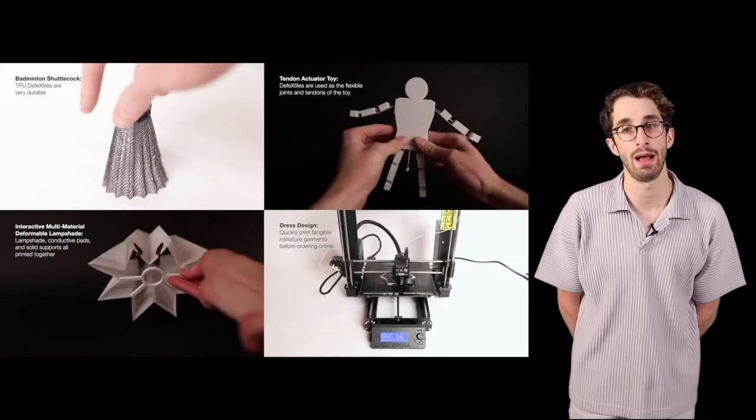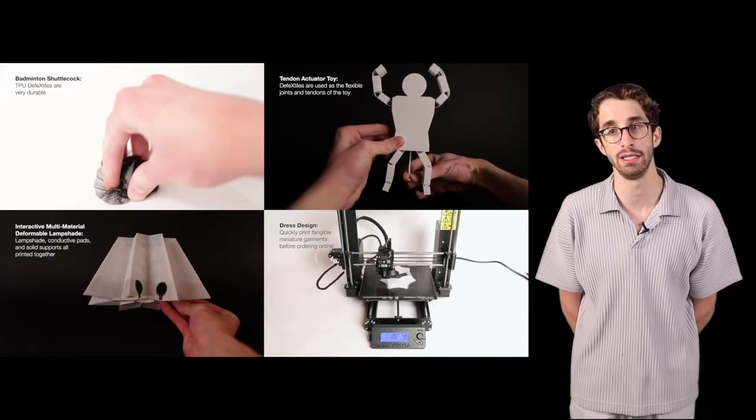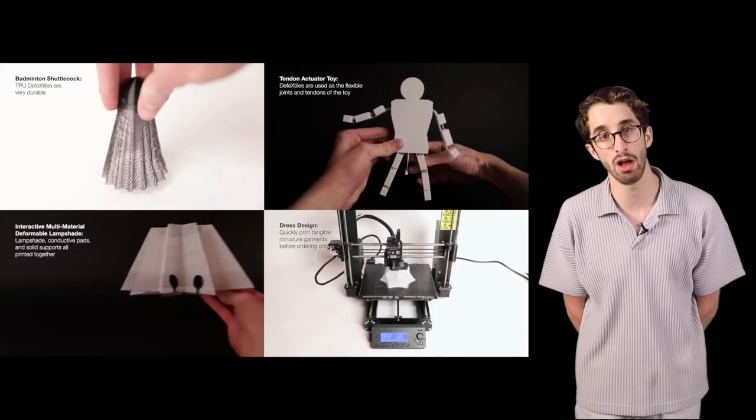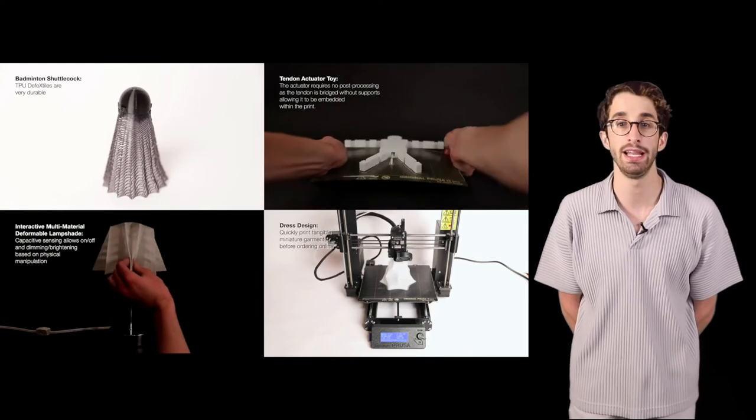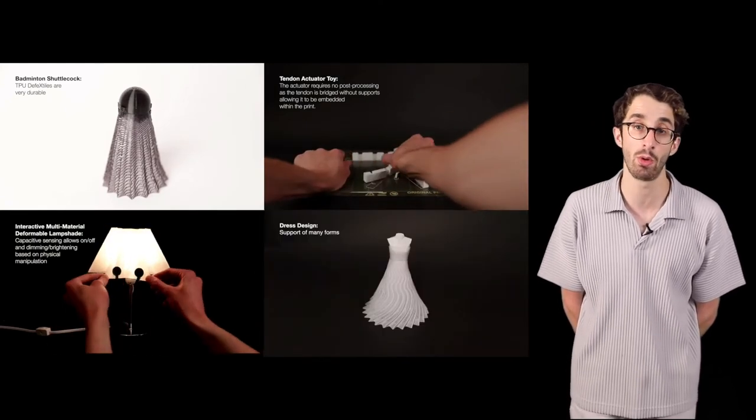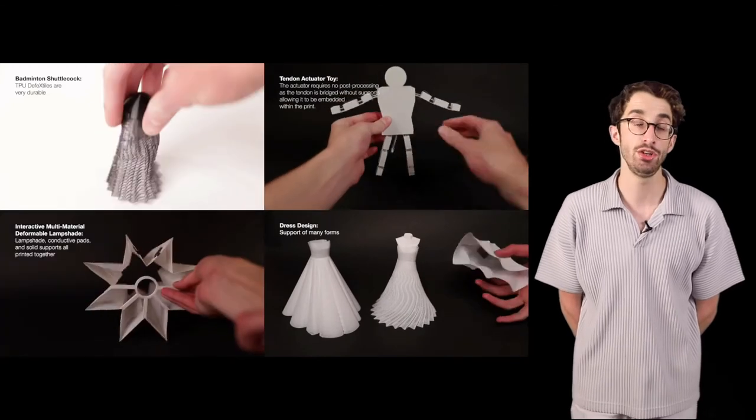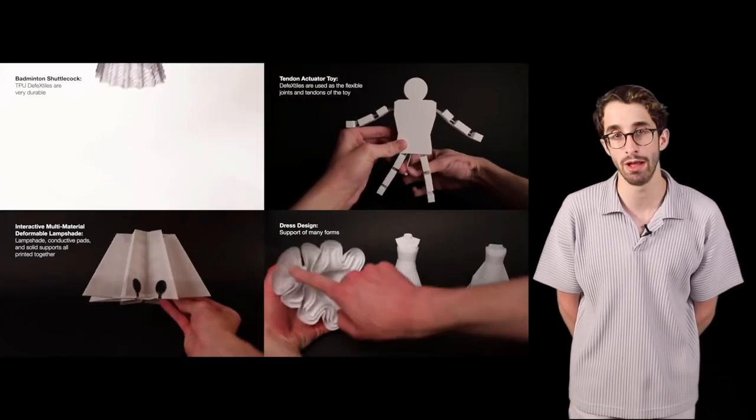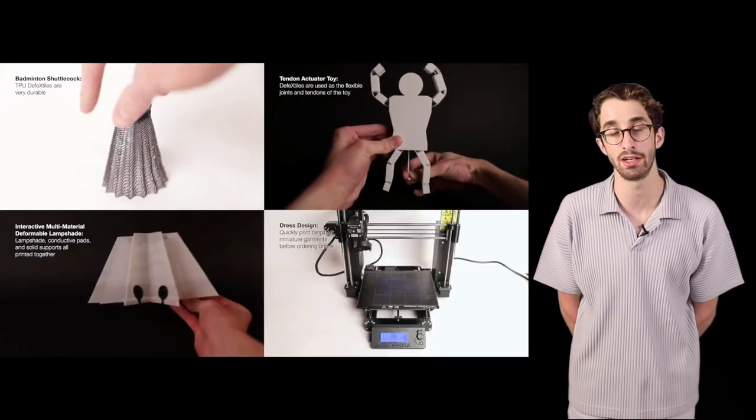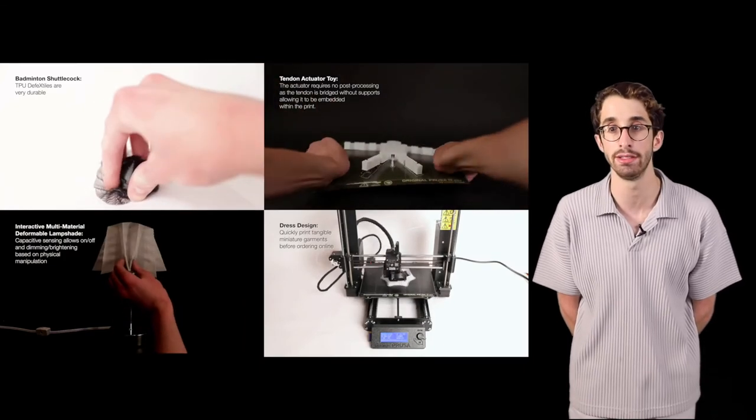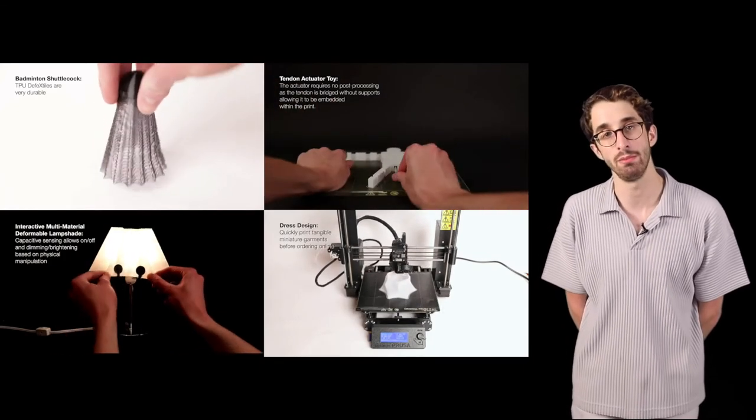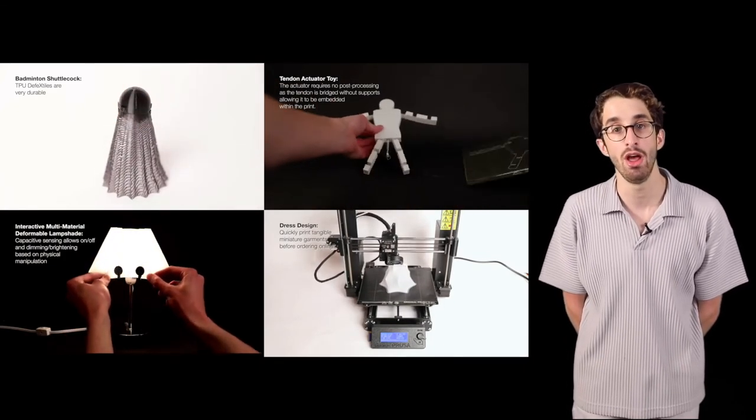Here we showcase a variety of different applications that the Defextiles design space enables. An ultra-tough shuttlecock printed with TPU, a dancing man tendon actuator which required no post-processing to fabricate, an interactive lampshade where the deformable lampshade, the solid supports, and the conductive pads were all produced as a single print, and a variety of dresses that can be used as tangible augmentation for online shopping.